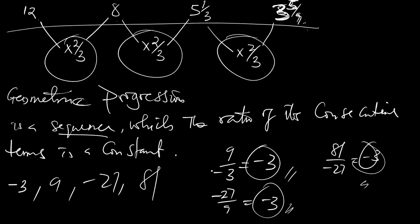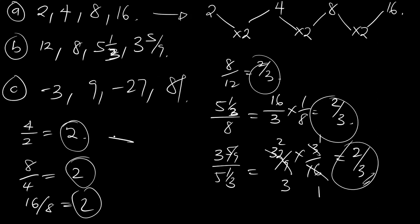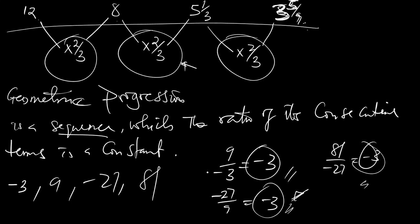Now, the constant might be a fraction or a whole number. It might be less than 1 or greater than 1 — just like 2/3 is less than 1, while 2 is greater than 1. There is a short form of geometric progression: the short form is G.P., in capital letters.